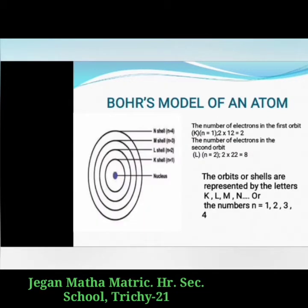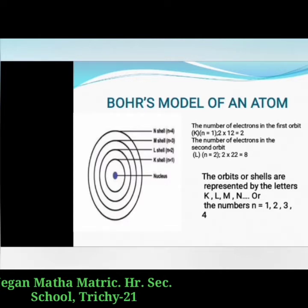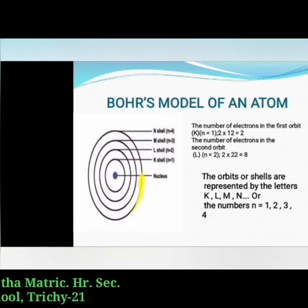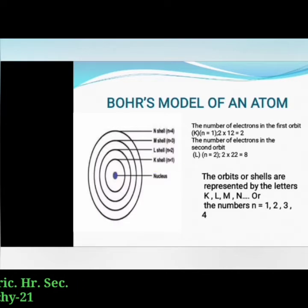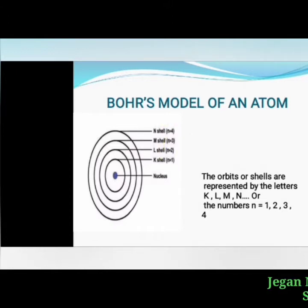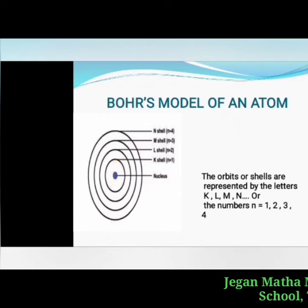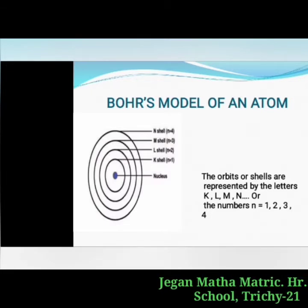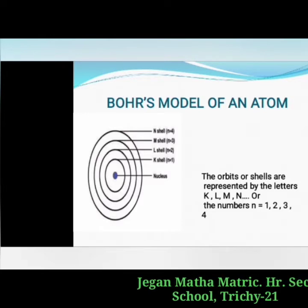The orbits or shells are represented by the letters K, L, M, and N, or by the numbers n = 1, 2, 3, 4. The orbit closest to the nucleus is the K shell — nearest to the nucleus — and it is the first shell. It has the least amount of energy, and the electrons present in it are called K electrons.